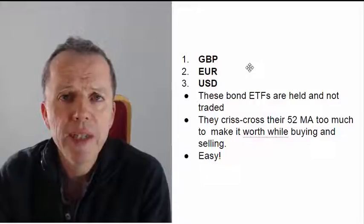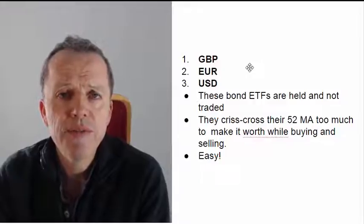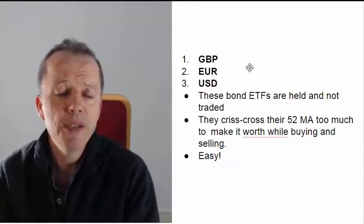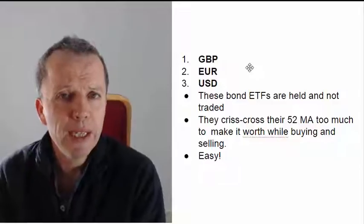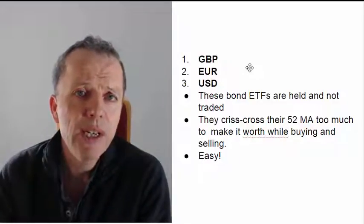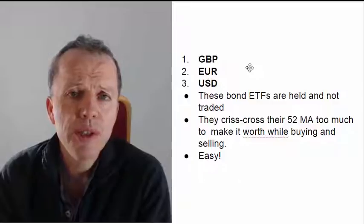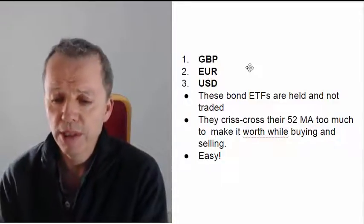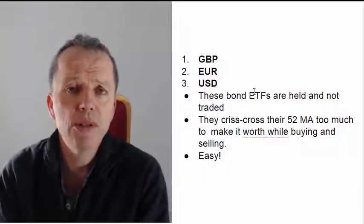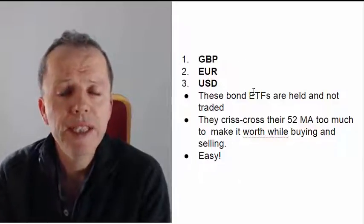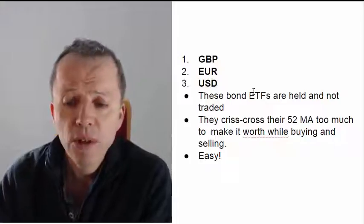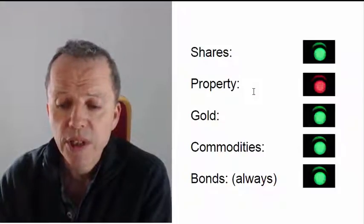I don't trend trade bonds because they crisscross their moving average too much. I have three bond investments: one denominated in pounds, one denominated in euros, and one denominated in US dollars. I just hold those and don't trend trade them at all — I don't even look at the graphs. It just spreads my risk across another asset class as well.